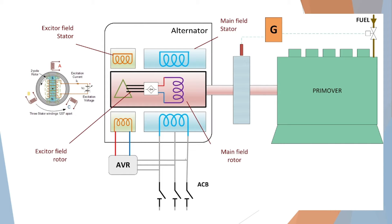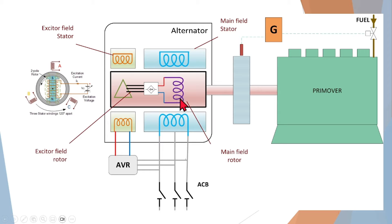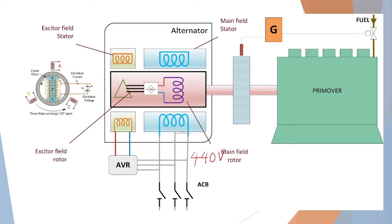Before looking at the topic, I will remind you what is the basic arrangement of a generator. A normal diesel-driven generator consists of a prime mover. The prime mover drives the alternator rotor, which has a magnetic main field. This magnetic field cuts the main stator winding, causing voltage to be induced, and the bus bar output — the generator output — will energize and show the rated voltage, in our example 440 volts.